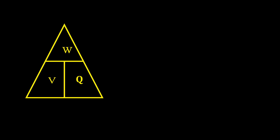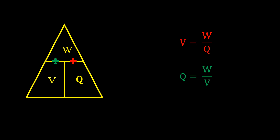Before doing a calculation, let us look at the formula triangle for potential difference V, charge Q, and work done W. We already know that V = W ÷ Q. From this, Q = W ÷ V when you are given work done and potential difference, and W = V × Q when you are given potential difference and charge.